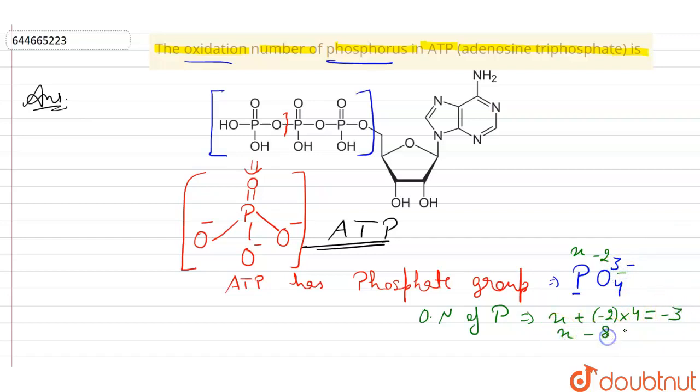So X minus eight equals minus three. So X equals minus three plus eight, which becomes plus five. That means the oxidation number of phosphorus in adenosine triphosphate, which contains phosphate group, is plus five. So you can write here plus five.